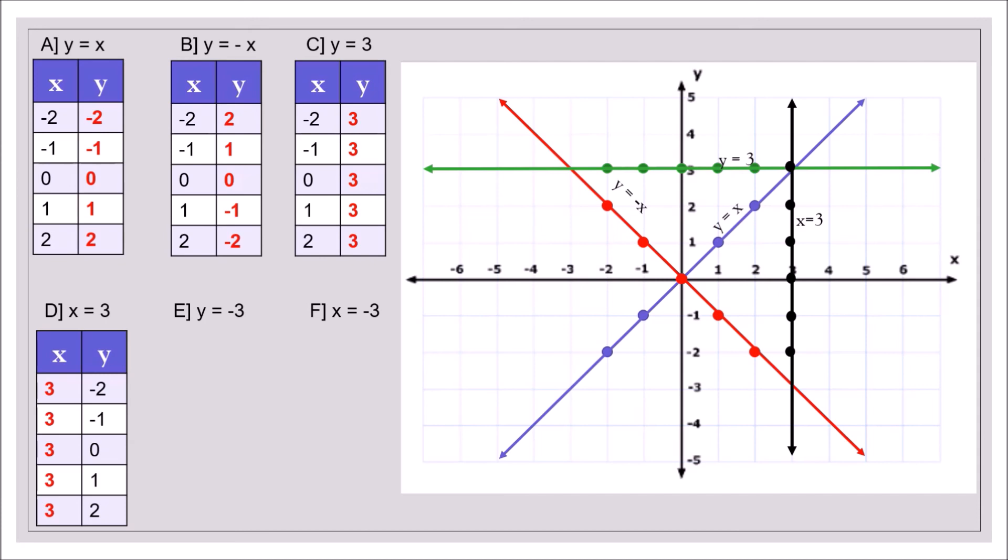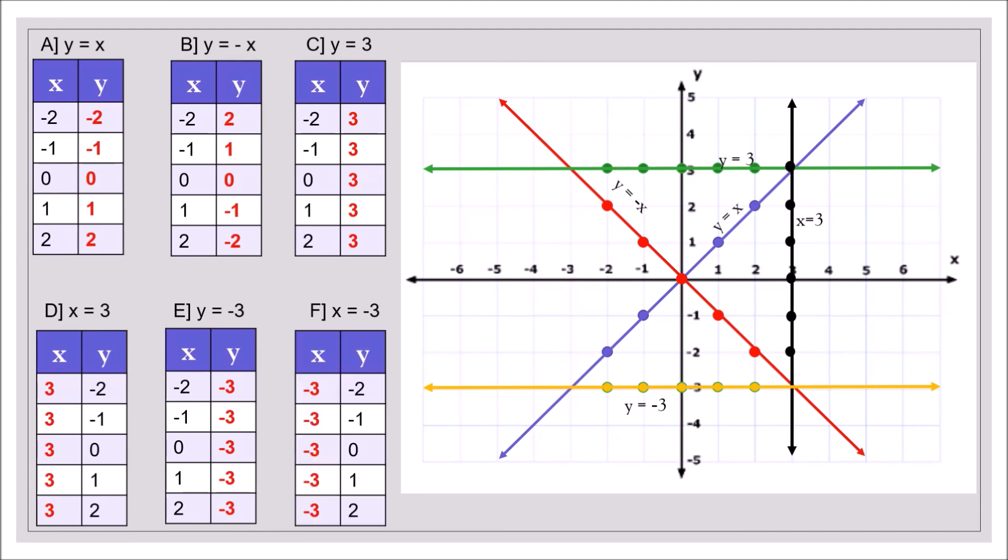Equation E, y equals negative 3 is similar to equation C. Y is always negative 3 for any value of x. So this is the horizontal line passing through negative 3 of the y axis. And the last equation is similar to D. x is always negative 3 for any value of y. So this is the vertical line passing through negative 3 of the x axis. So x is equal to negative 3.